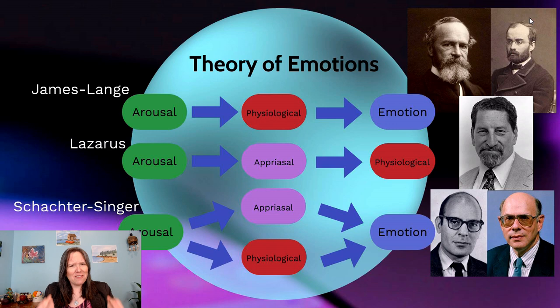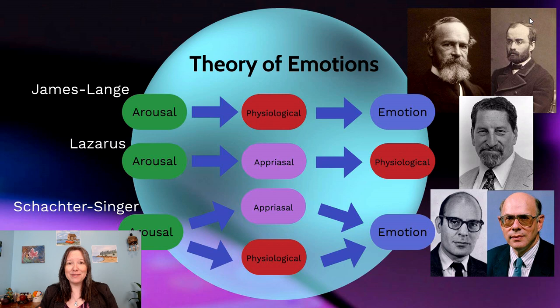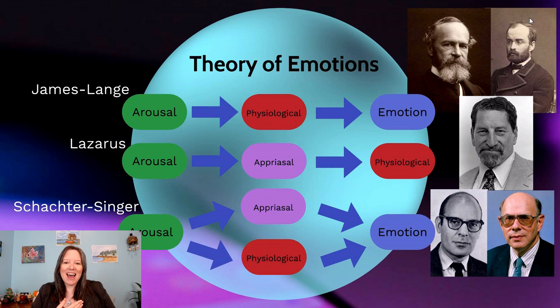One of our earliest theories comes from William James and Carl Lange. The idea is that our body being aroused — our heartbeat, our breathing rate — this level of arousal can influence our physiological status, and this physiological status can influence our emotions. For example, if you saw a snake and your heart went really fast, that heart racing would be interpreted by us and make us feel fear. This theory was not perfect.